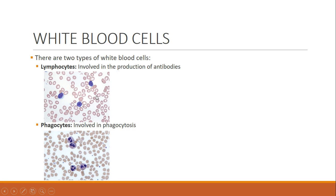Next up are the white blood cells, and again you need to know how these look under microscope conditions. We've got two different types. The first type of white blood cells are lymphocytes, and lymphocytes are involved in the production of antibodies. Phagocytes are involved in phagocytosis, which is basically how cells like these break down molecules by engulfing them and using enzymes to break them down and releasing the fragments out. For now, you just need to know the terms: lymphocytes for antibodies, and phagocytes for phagocytosis.